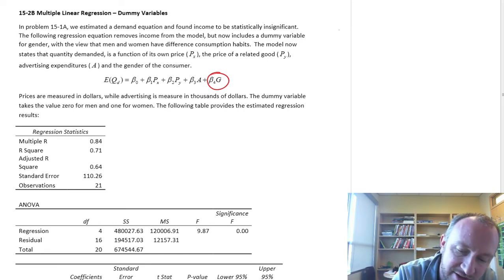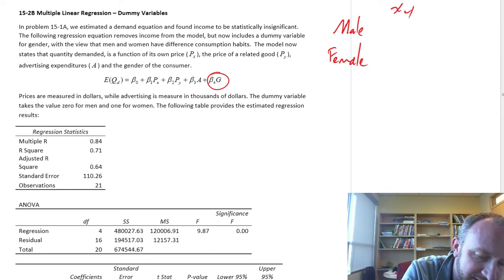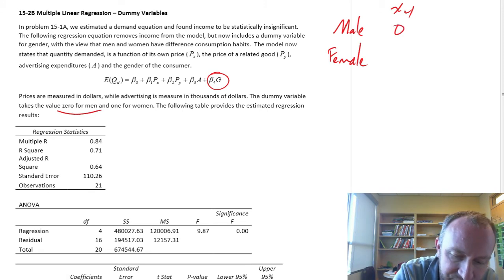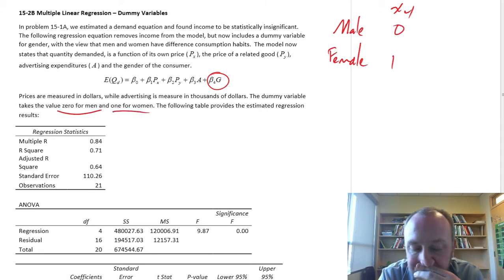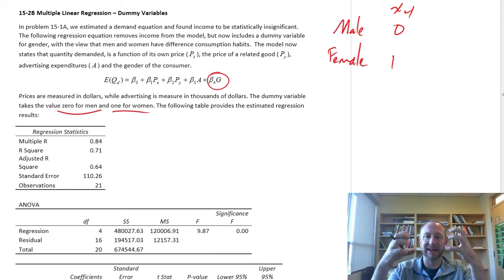I've defined this gender variable with two levels: male or female. So I just need one dummy variable, x4. The dummy variable takes a value of zero for men and one for women. This allows us to take that original data set and split it into two subsets.